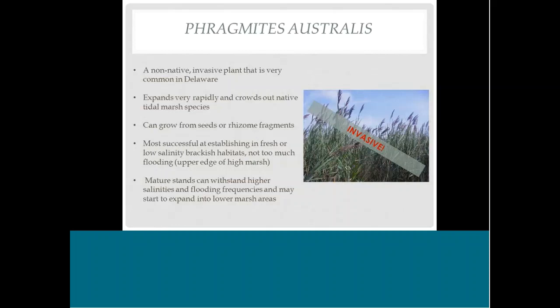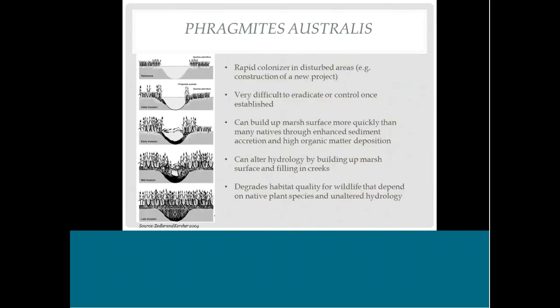Phragmites is very widespread in Delaware and throughout the mid-Atlantic. It's an invasive plant that expands rapidly and crowds out native marsh species. It can grow from seeds or rhizomes, and tends to be most successful in fresher or low-salinity brackish marshes where there's fresh water and less flooding — which is why you tend to see it on the upper edge of high marshes. You do not want Phragmites because it really degrades habitat quality, and living shoreline construction disturbs the area, making sites prime candidates for Phragmites invasion.